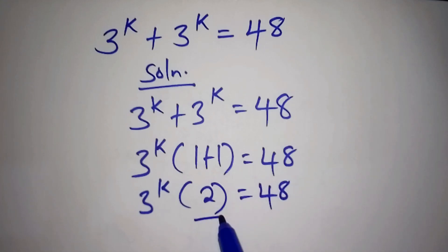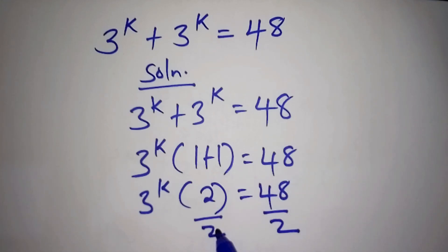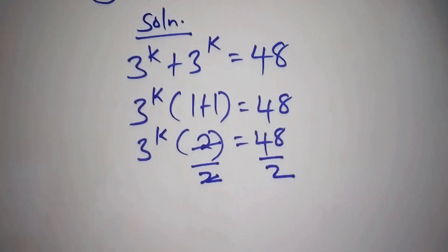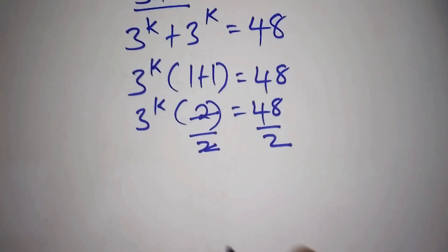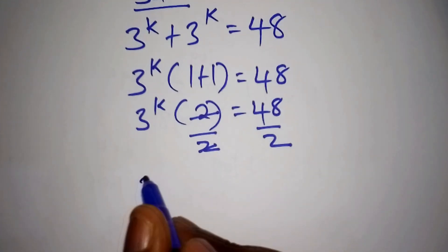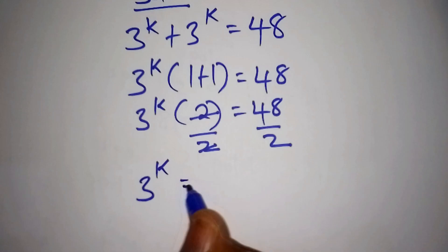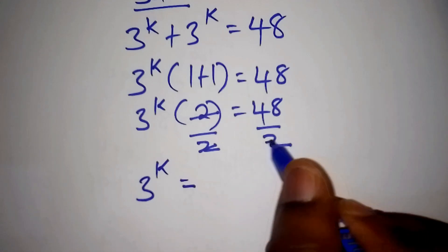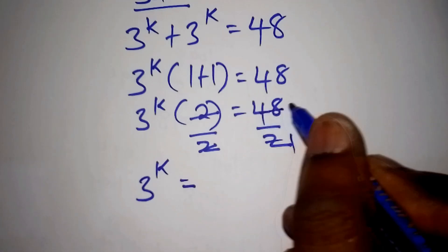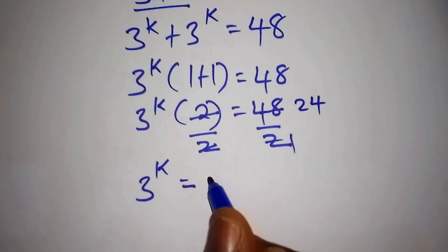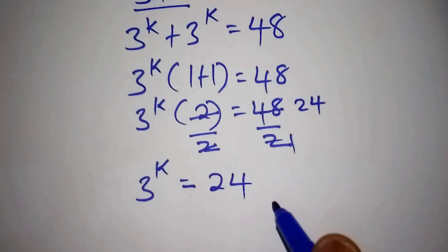We work out 3 to the power of k multiplied by 2 is equal to 48. Then we divide both sides by 2, so the 2s cancel, and we remain with 3 to the power of k is equal to 24.